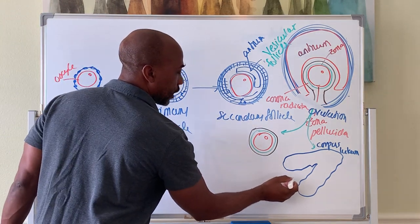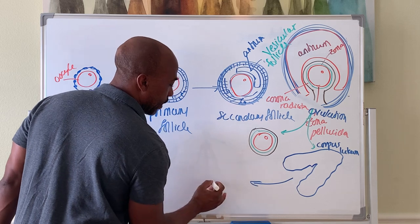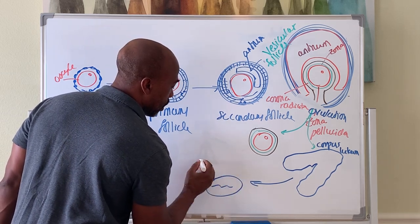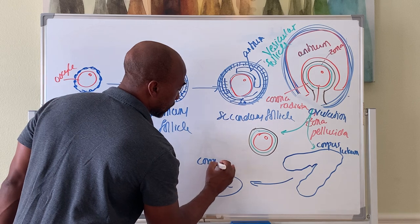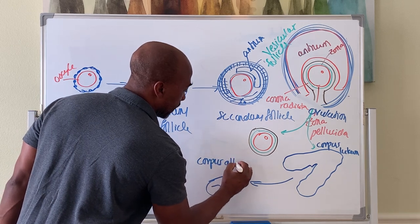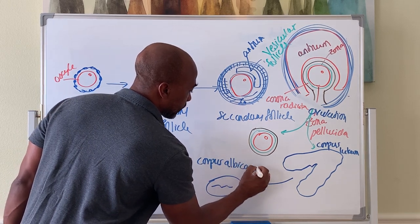The corpus luteum will then die and form a structure called the corpus albicans.